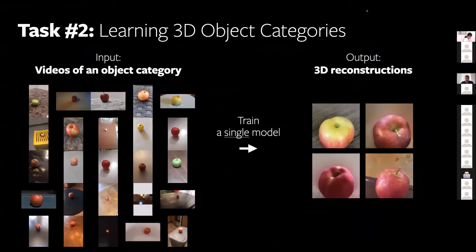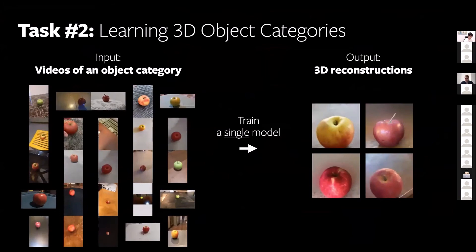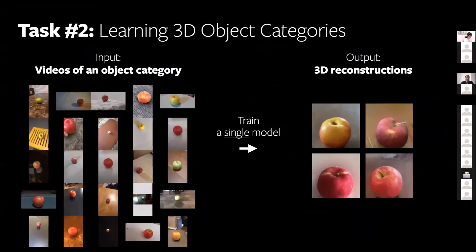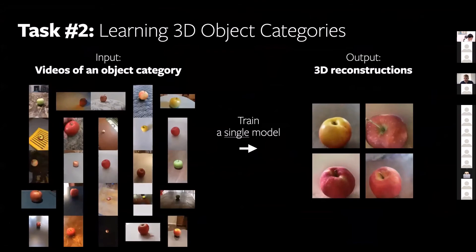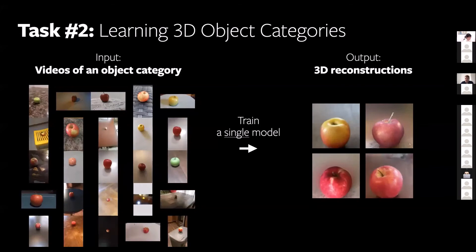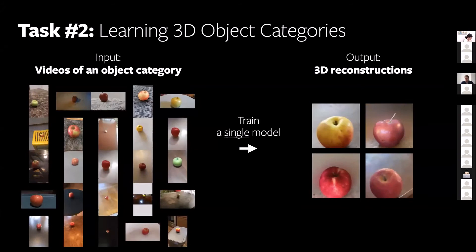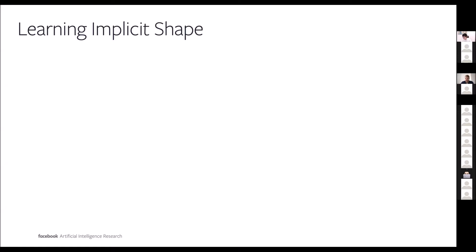After verifying that the dataset is suitable for the overfitting task, the next stage is actual category-specific learning. Here, the idea is to take a bunch of videos of a given object category and train a single model which is able to reconstruct every single video in the training set, testing whether individual implicit function-based methods have enough capacity to represent the whole family of instances of a given object category. We focused again on the implicit shape framework since it gave the best performance in the overfitting task.